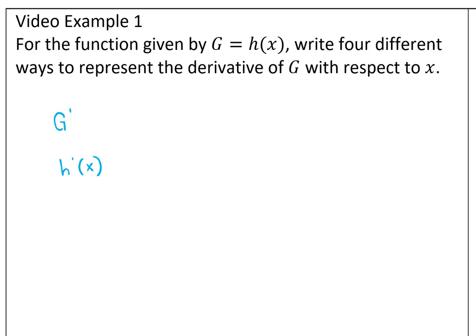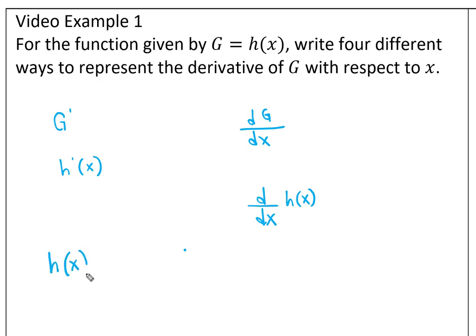The other two ways are using Leibniz notation, the d/dx. One would be dg/dx, the other would be d/dx of h(x) — pulling it outside of the d/dx notation. This is the derivative with respect to x. All of these notations refer to the derivative of a function, not the function itself. In general, your function is not the same as the derivative of your function.